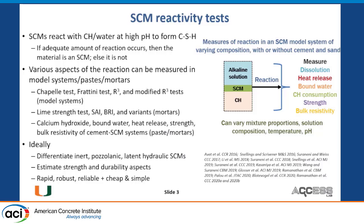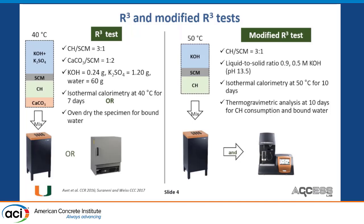I'll talk about four tests in total, spending most of the time on R3 and modified R3. The R3 test is ASTM C1897 — it is a standard ASTM test which you can run. The mixture proportions include calcium hydroxide, SCM, calcium carbonate, potassium hydroxide, and K₂SO₄. You mix them and run isothermal calorimetry, which tells you the heat release for seven days. And/or you can put the specimen at seven days in an oven to measure bound water.